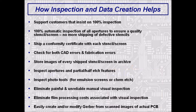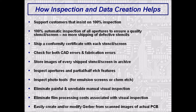Stencil inspection and data creation can help keep existing customers and win new ones by providing 100% automatic optical inspection of all apertures versus antiquated manual inspection. A conformity certificate is shipped with each stencil to document this 100% inspection. Check for CAD errors and fabrication errors by inspecting both the cut file and the original customer Gerber against the actual stencil. An image of every shipped stencil can also be archived for future reference. Inspect partial and half-etched features as well as complete apertures, photo tools used for emulsion screens or Chem Edge stencils, and the mandrel for electroform stencils. Eliminate manual visual inspection, subject to operator error, and eliminate the cost, chemicals, and time associated with producing films for visual inspection — savings that can be significant and support environmental concerns.